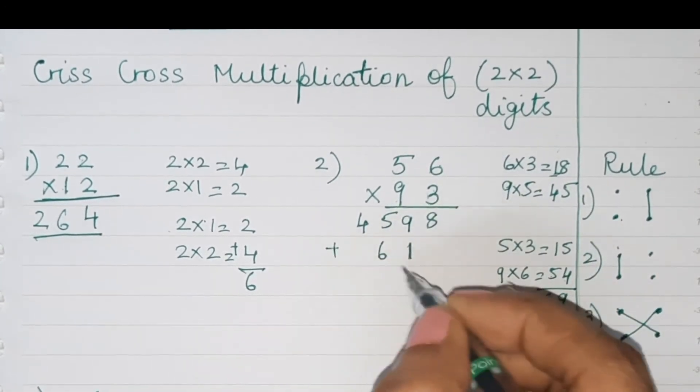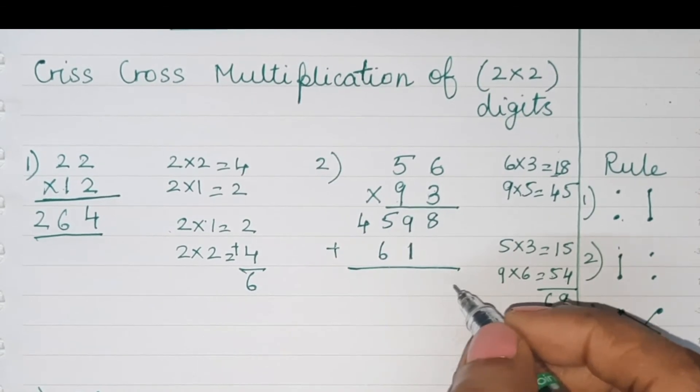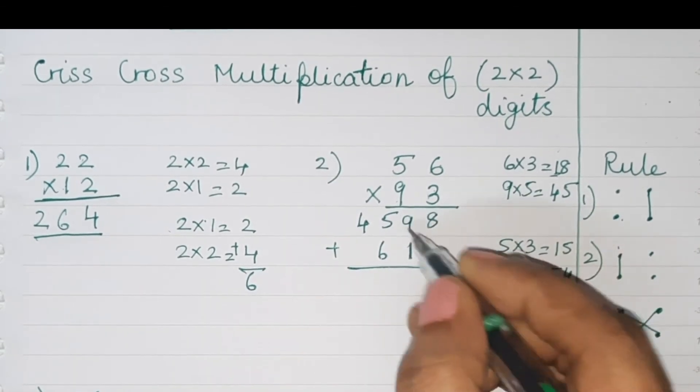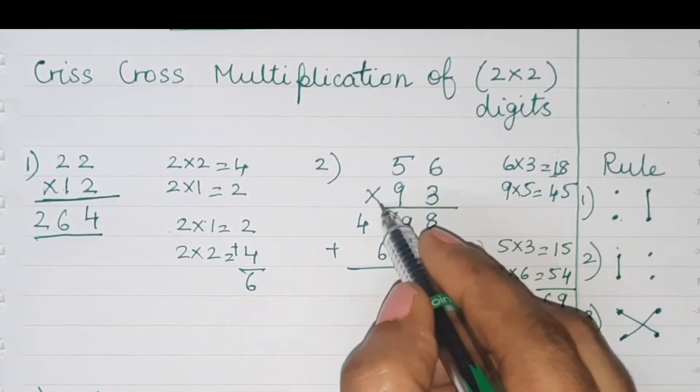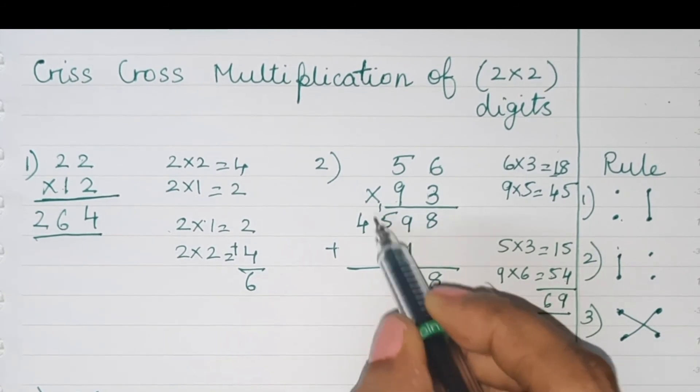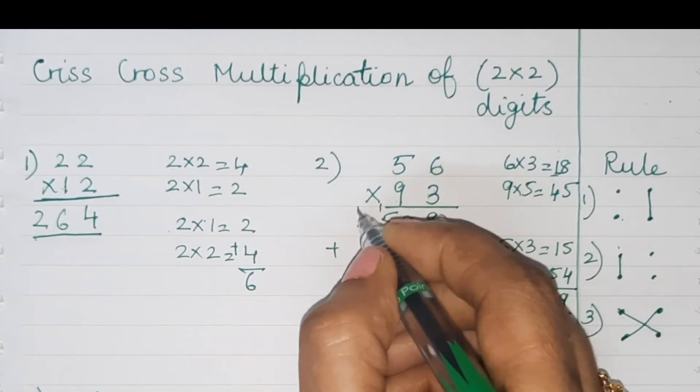Now add. Nine plus one is 10, one carry over. Five plus six is 11, plus one is 12. Four plus one is five.